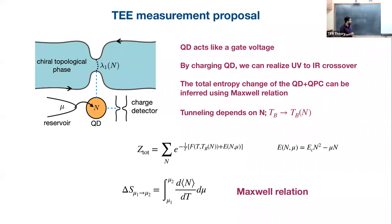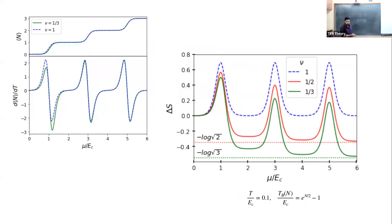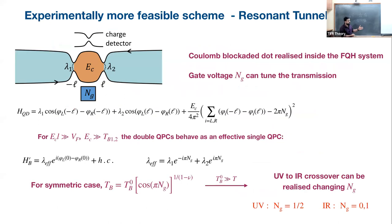A similar kind of idea was used in a PRL 2019 paper by my postdoc advisor and others — they proposed to measure the half-log-2 entropy of a Majorana zero mode. This kind of idea was used there. But in the present case, we have to use many charge steps to realize the crossover, which is why we needed to look at the more sophisticated Fabry-Perot approach. Hopefully the experimentalists will be able to implement it.